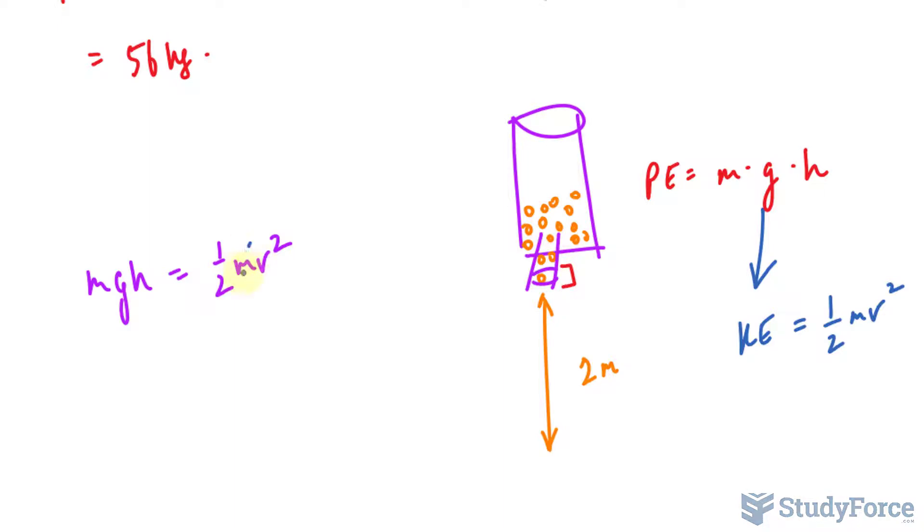Which has a formula of half mass times velocity raised to the power of 2. Now, because all this potential energy is going into the kinetic energy, I'll make them equal to each other. So the potential energy equals to the kinetic energy. The nice thing about this is that the masses will cancel out because you have m and m on both sides of the equation.